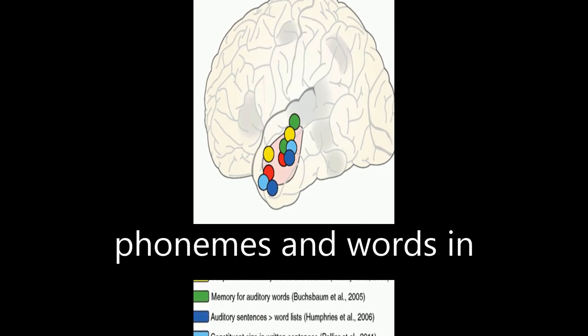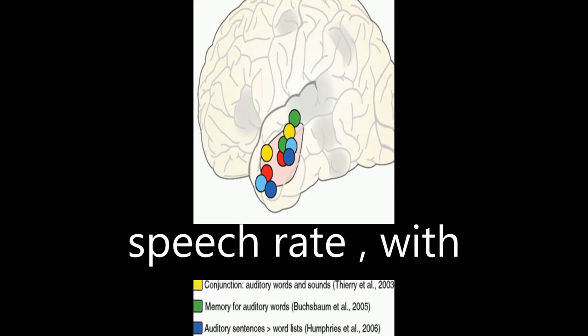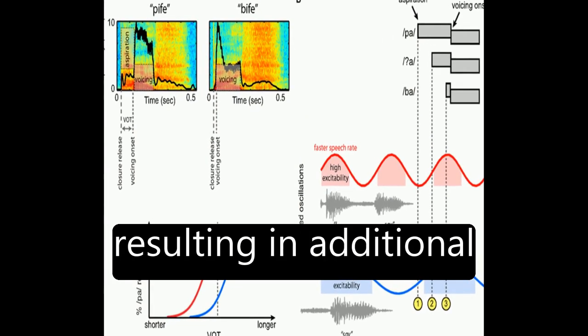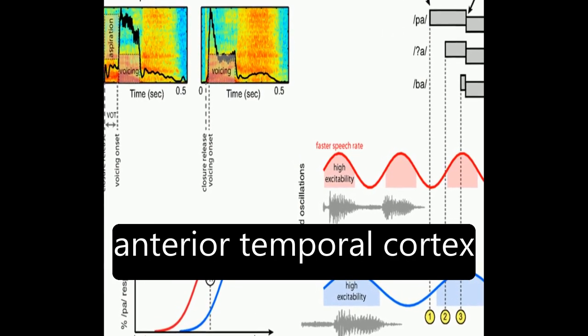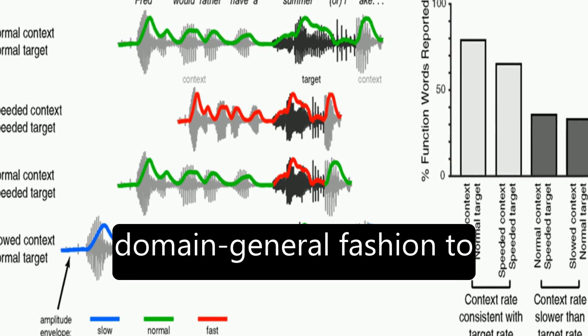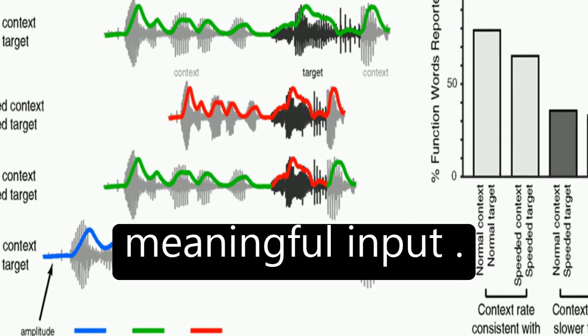The perception of phonemes and words in connected speech is influenced by preceding speech rate, with intelligible speech resulting in additional recruitment of left hemisphere regions, including lateral anterior temporal cortex, which functions in a domain general fashion to support ongoing memory and integration of meaningful input.